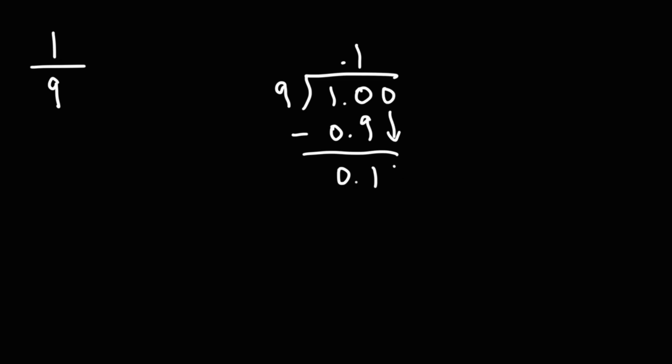If we bring a 0, 9 goes into 10 one time. This is going to be 0.09 now. Since you multiply 9 by 0.01. And this is going to be 0.01. Bring down another 0. We got a 10 again. 9 goes into that one time. And this is just going to keep on going. So at this point, we can see the 1 is repeating. So 1 over 9 is basically 0.1 repeating.